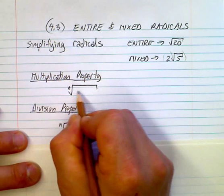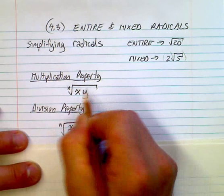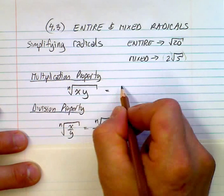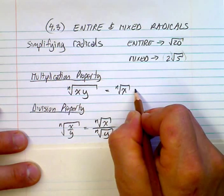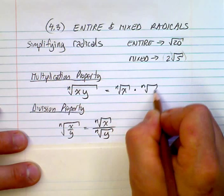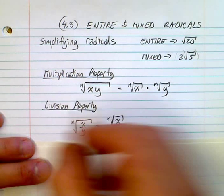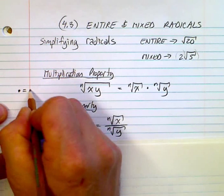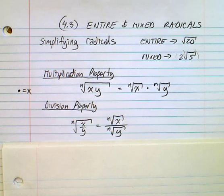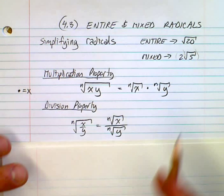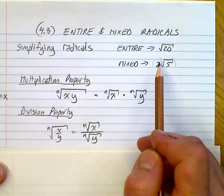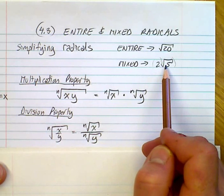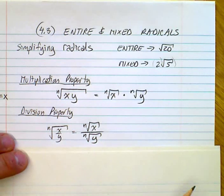The multiplication property is similar: the nth root of xy equals the nth root of x times the nth root of y. Note that the dot symbol here means multiplication — just like brackets or a multiplication sign. If you have a number in front of a radical, that's also multiplication.